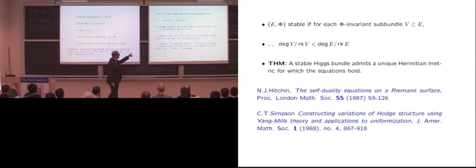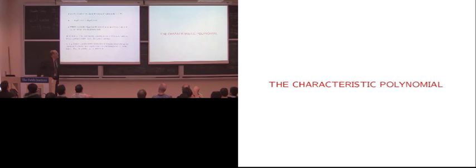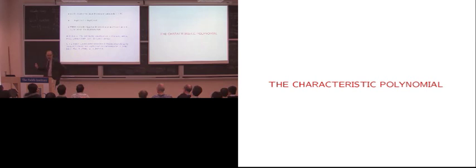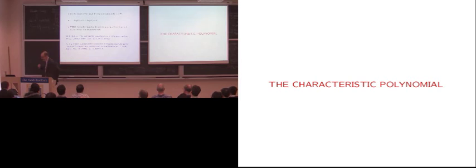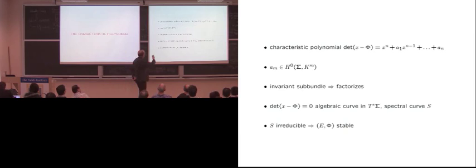What one needed to prove was that any stable Higgs bundle — stable in this sense — admits a Hermitian metric for which the equations hold. I gave a proof for rank two on a Riemann surface, and Simpson gave a much more general proof for arbitrary rank and in higher dimensions. The most important feature, which we've been hearing about the past couple of days, has been the characteristic polynomial of this Higgs field, the base of this fibration.